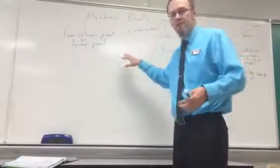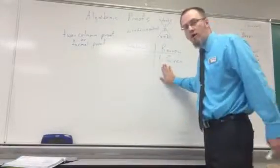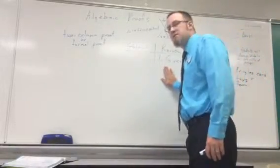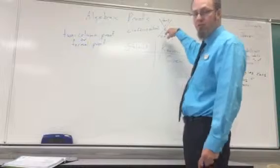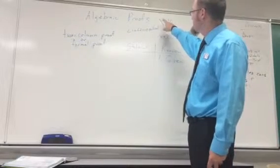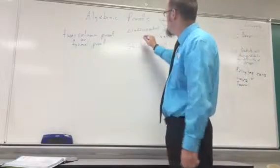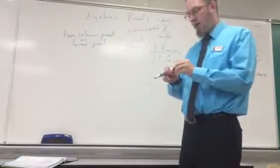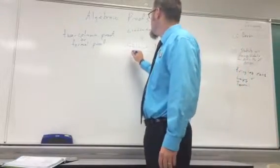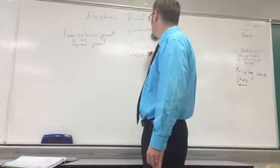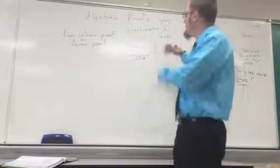In our two-column proof, the left-hand side is the statement and the right-hand side is the reason. We always start off number one with the information that we were given — we take it to be true. So I put up here angle one and angle two. Angle one is 6x plus 5, angle two is 30, and I'm supposed to find the value of x. I am given this illustration, so angle one and angle two are vertical angles. I put that as my statement: angle one and angle two are vertical. That was given to me in the illustration.